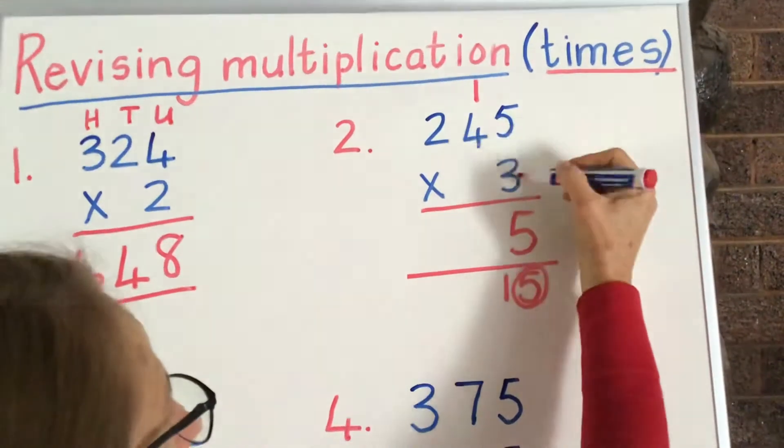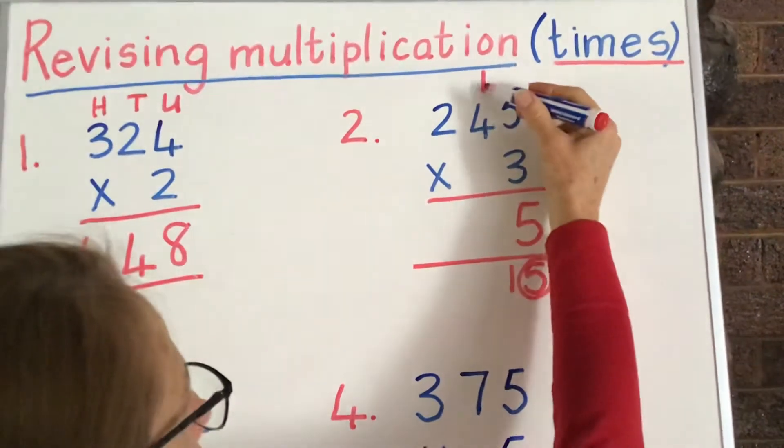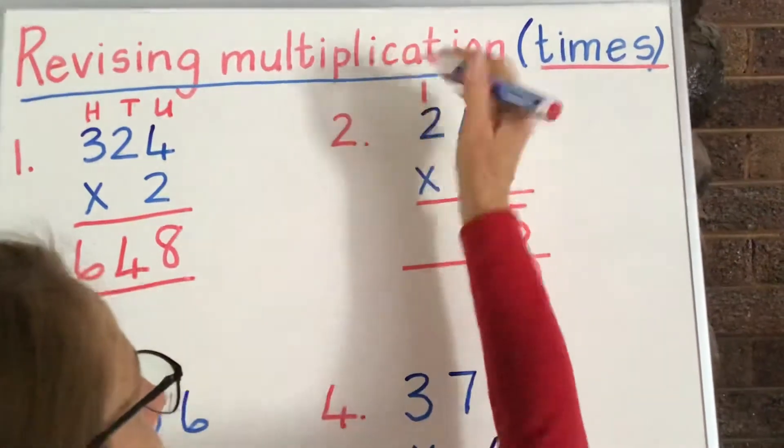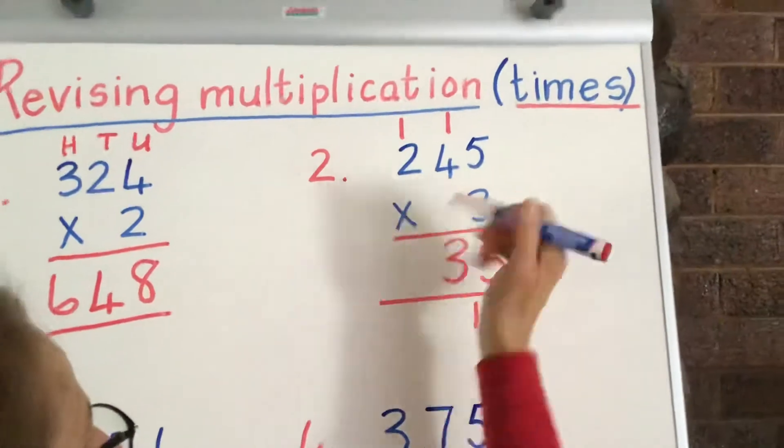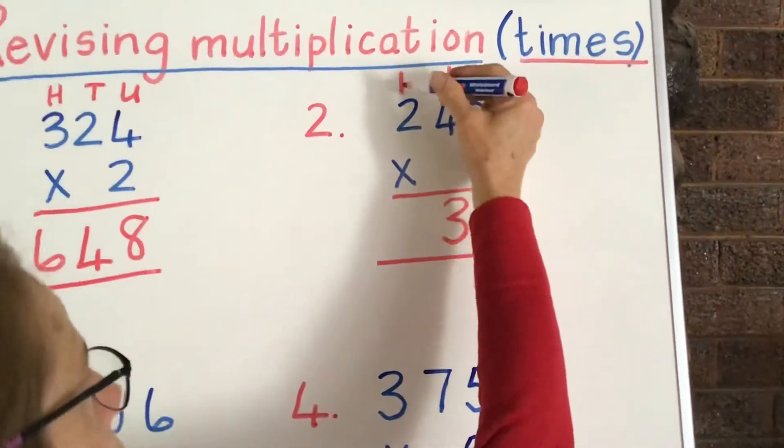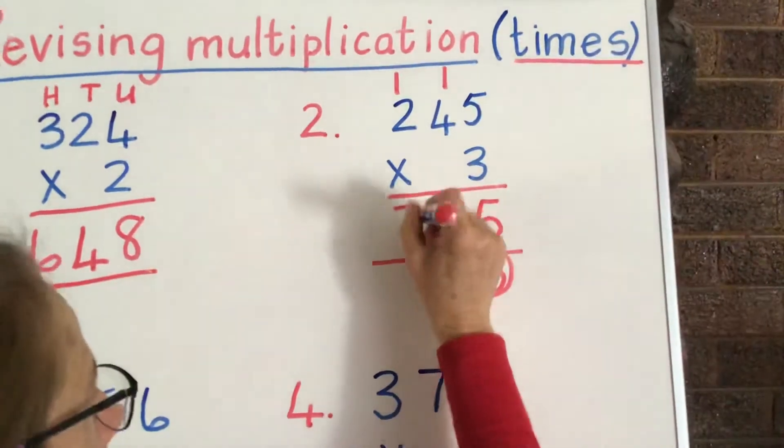3 times 4, remember we say 3 times 4, because it's tens, 12 plus 1 is 13. Put down your 3, carry the 1 above the hundreds, it's actually 100. So, remember, 3 times 2 is 6, plus the extra one there is 7.